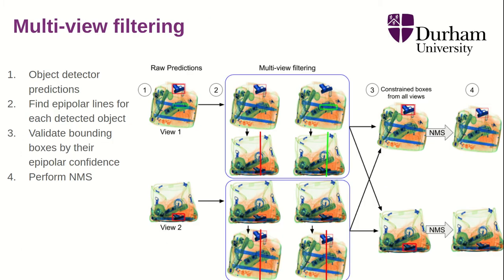Multi-view filtering can be summarized as follows. First, we obtain raw predictions from a standard detector. Then we compute the epipolar lines for each of these predictions, and validate the bounding boxes by their epipolar confidence. If they are far from an epipolar line, they receive a low epipolar confidence and are eliminated — this is how we remove false positives. After this process, we apply non-maximum suppression and obtain our final result.